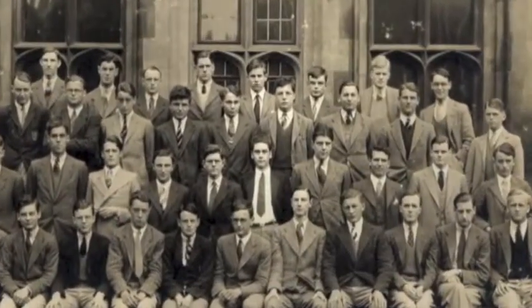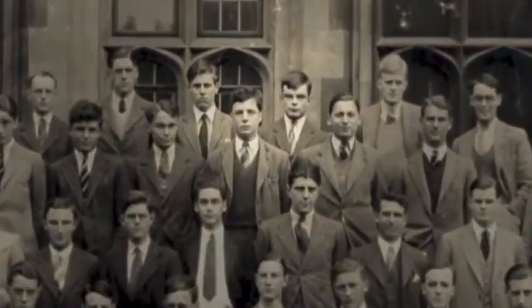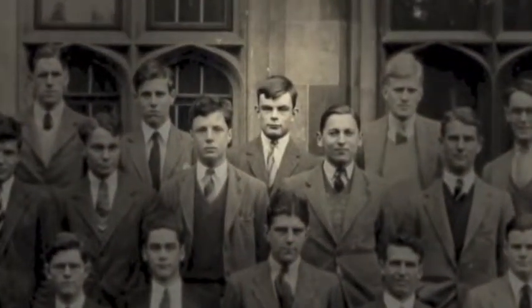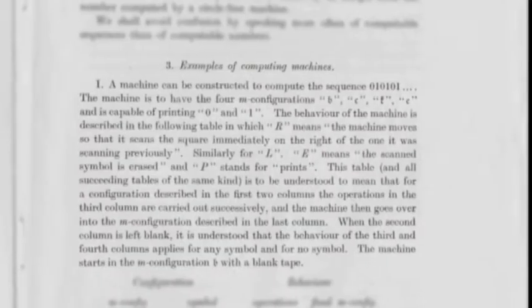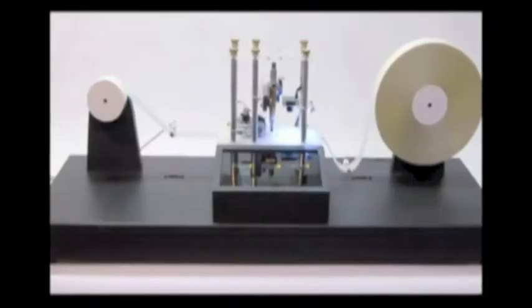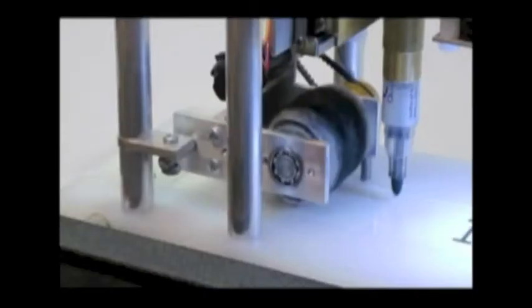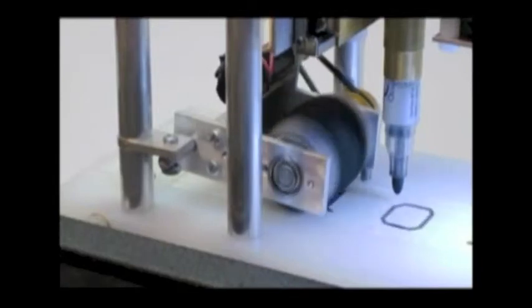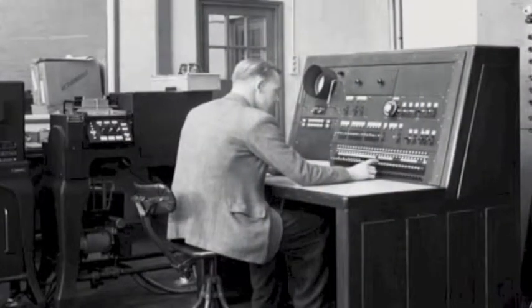Turing was a tenacious and creative problem solver and would not see a question go unanswered. One day, whilst out for a run, he imagined a hypothetical machine that would read symbols on a strip of tape. It would delete and rewrite symbols based off of a table of rules following the instructions set down by a computer, a person who would perform the operations.